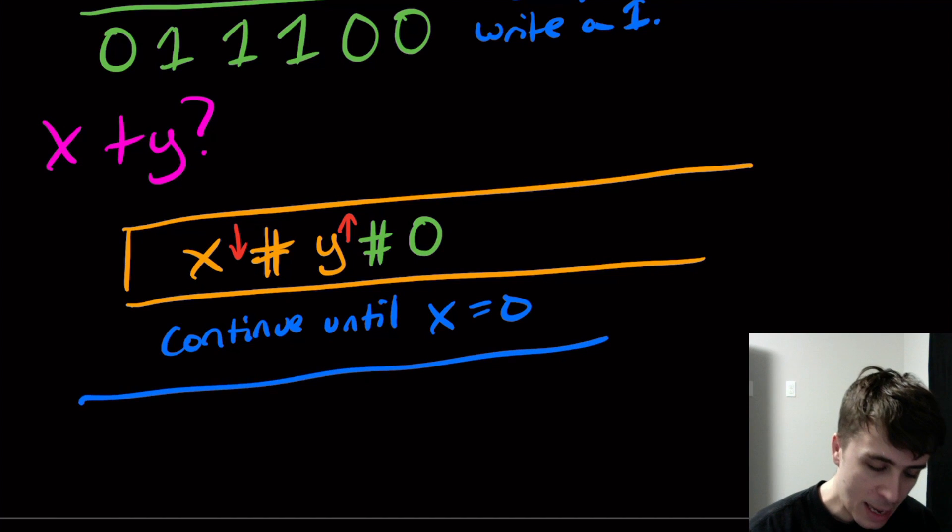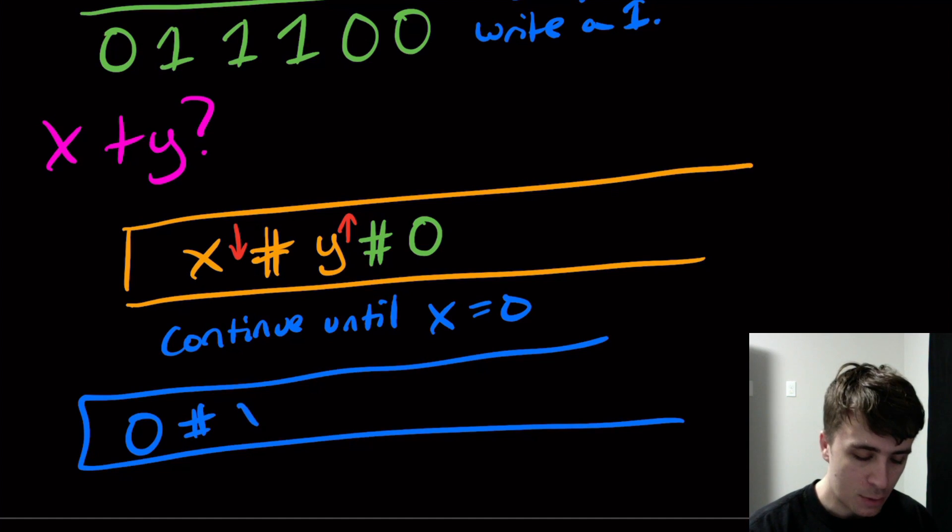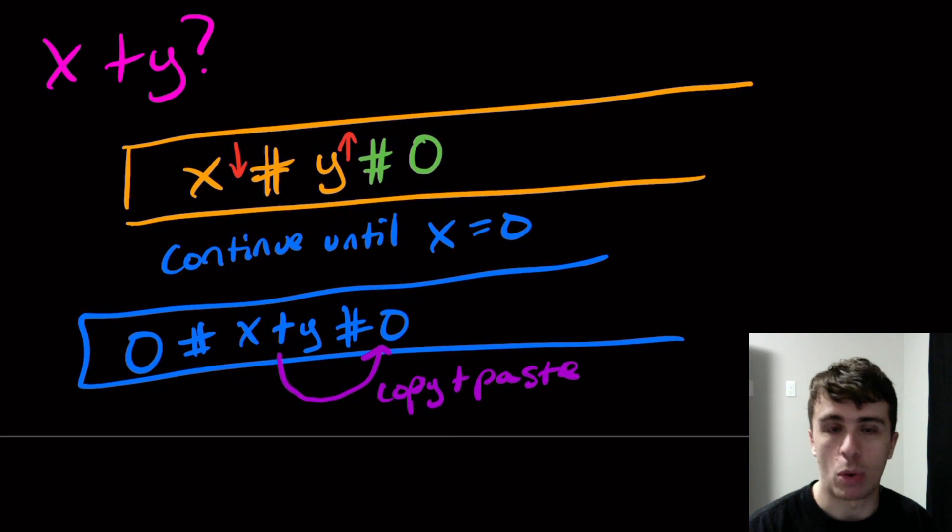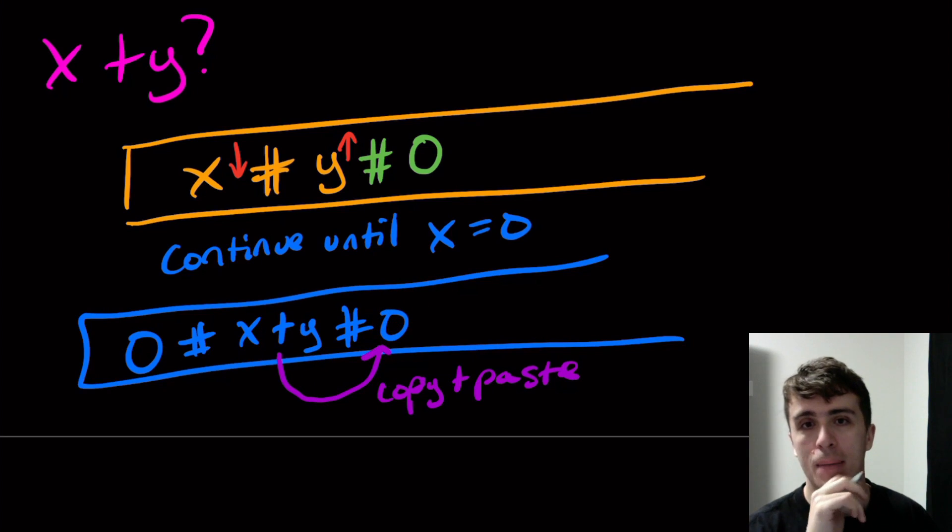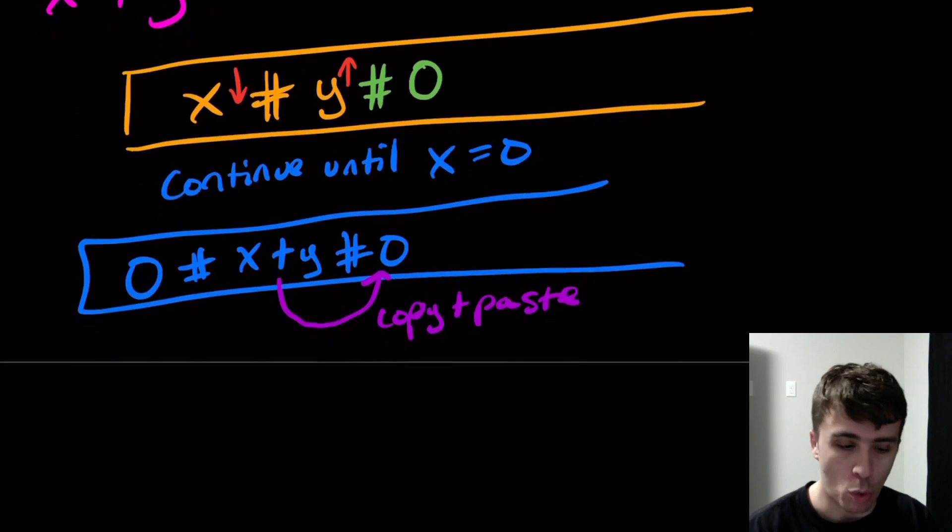At the end of the day, we're going to have 0 over here because we continue until we get there. Then we have equivalently x+y here, and then a 0. Then all I need to do is just copy and paste this over. In fact, if we didn't care where the x+y was on the tape, we're already done because it's right here. If we did want it elsewhere, we would have to copy and paste, and that's easy to do.